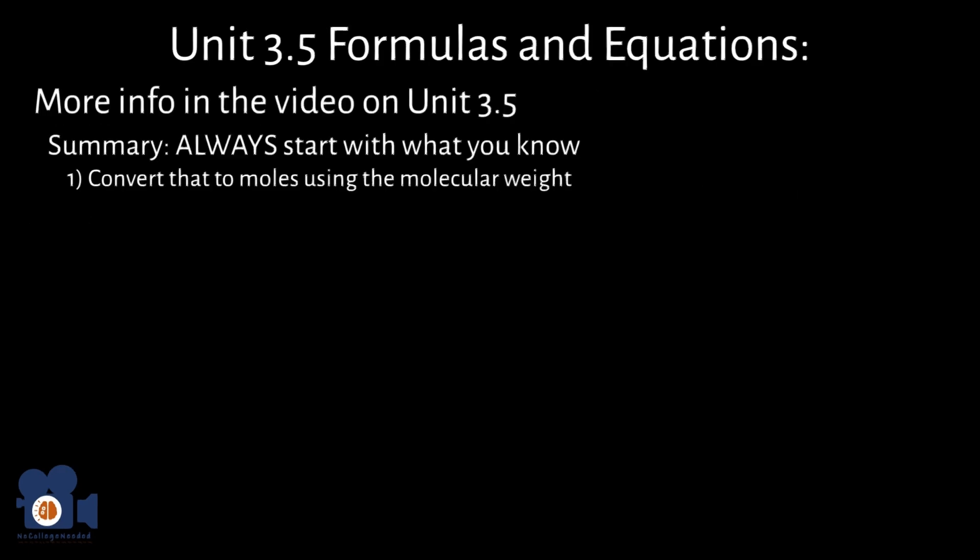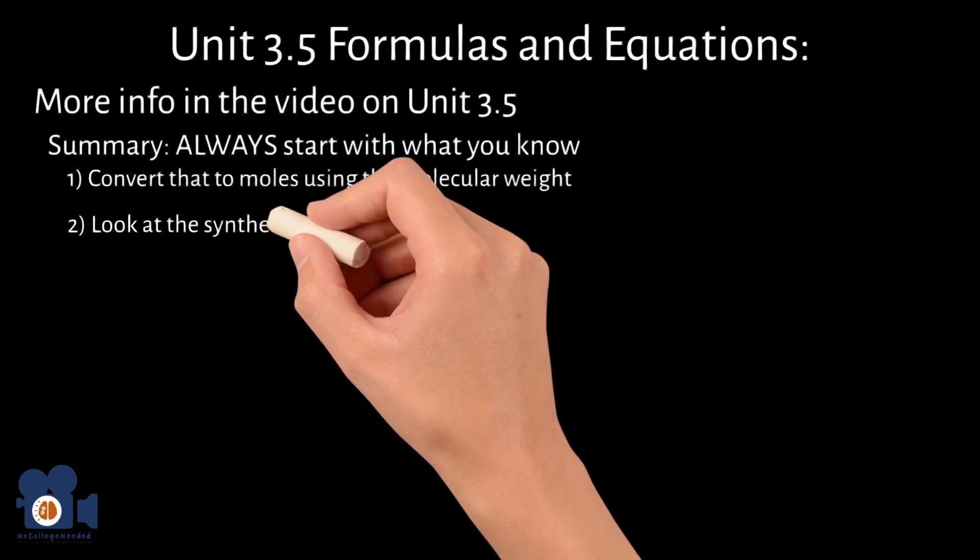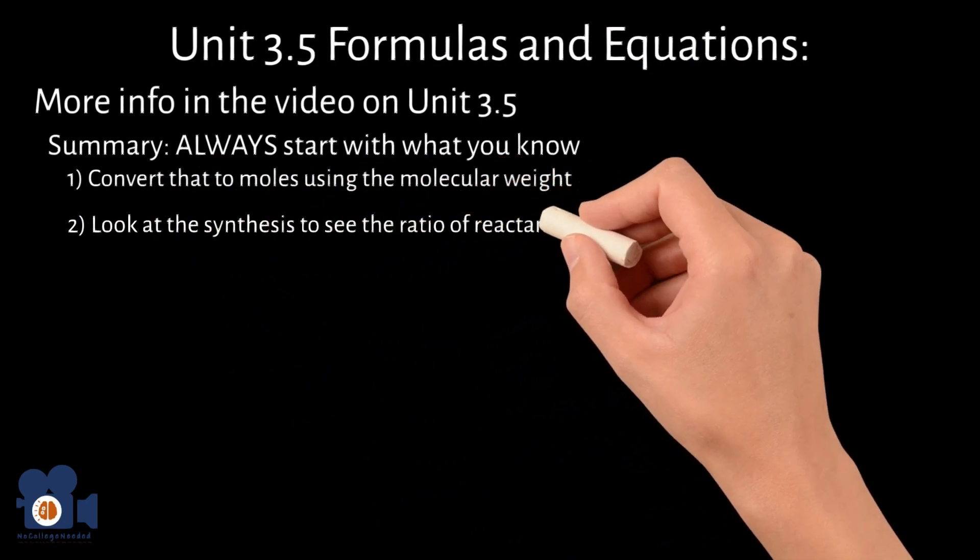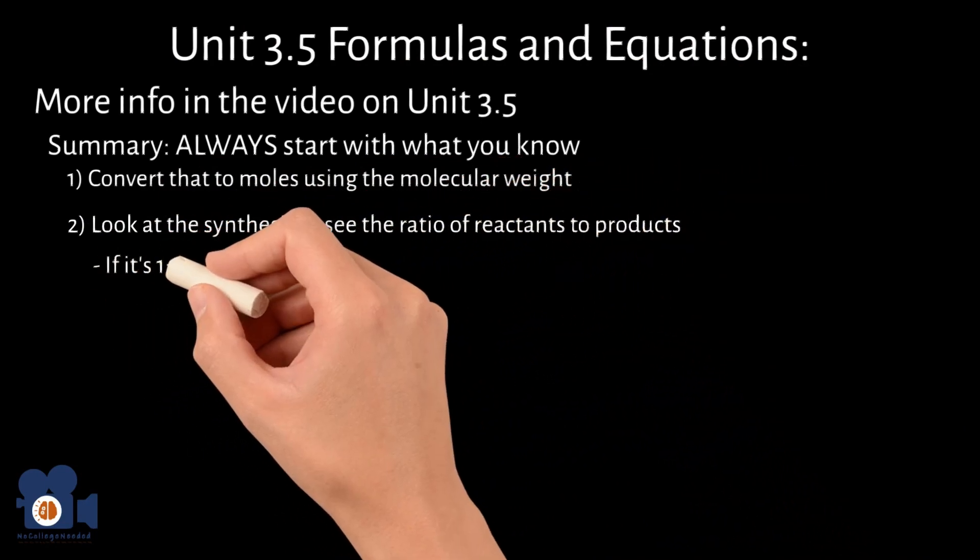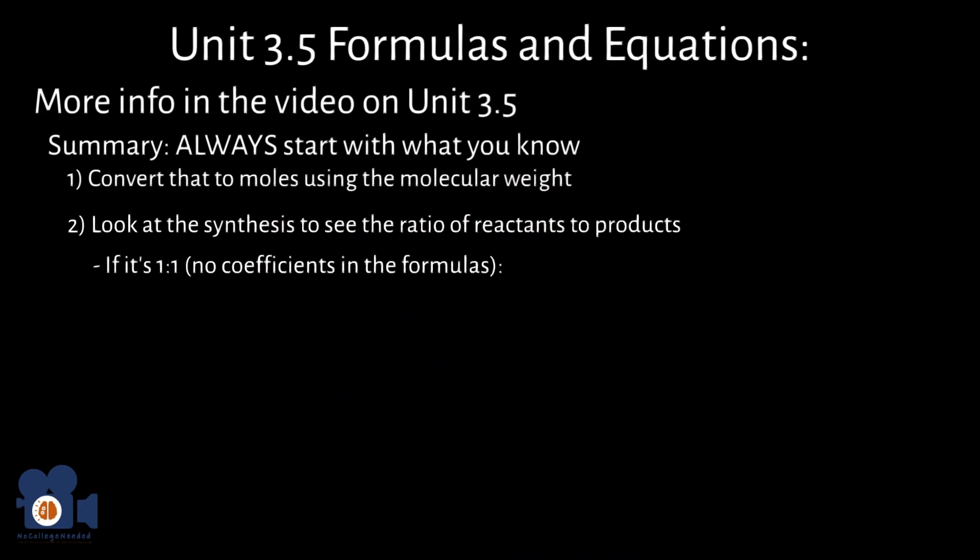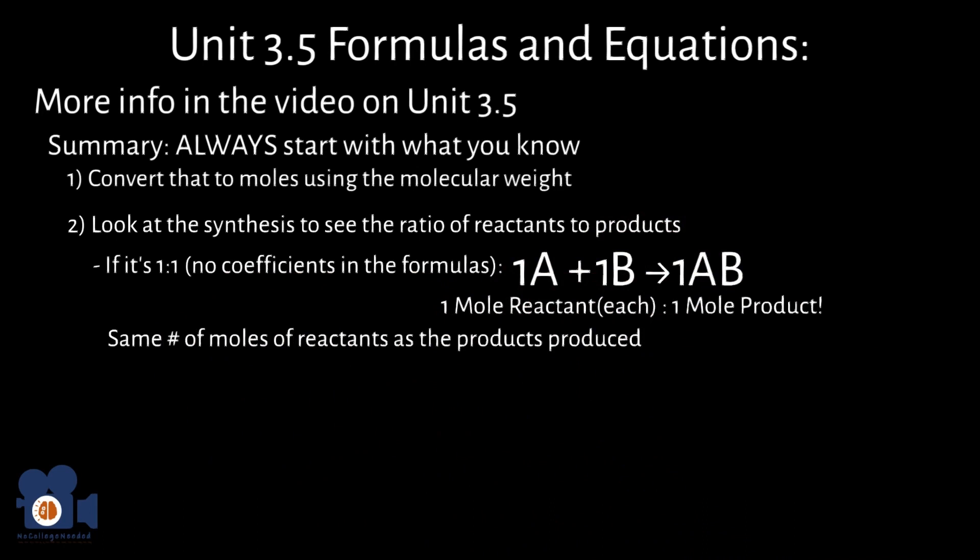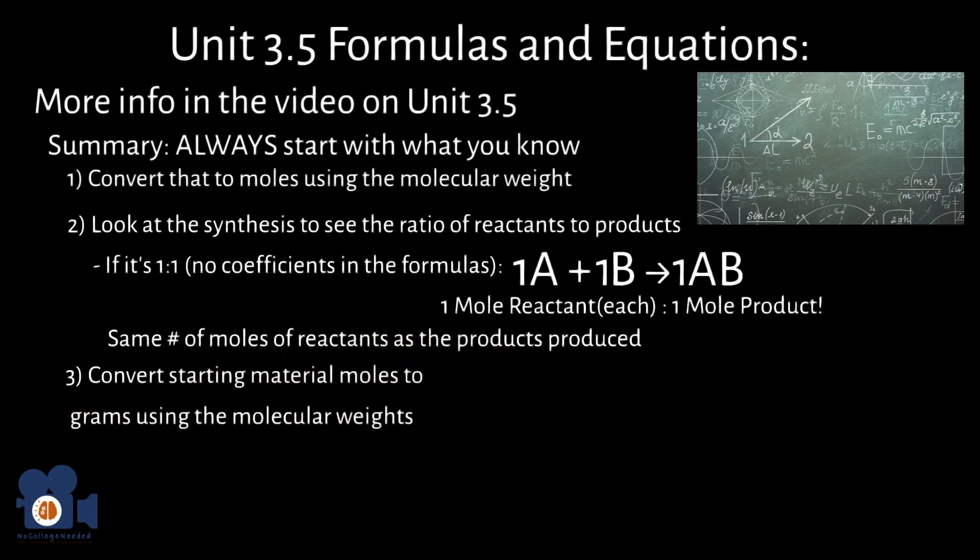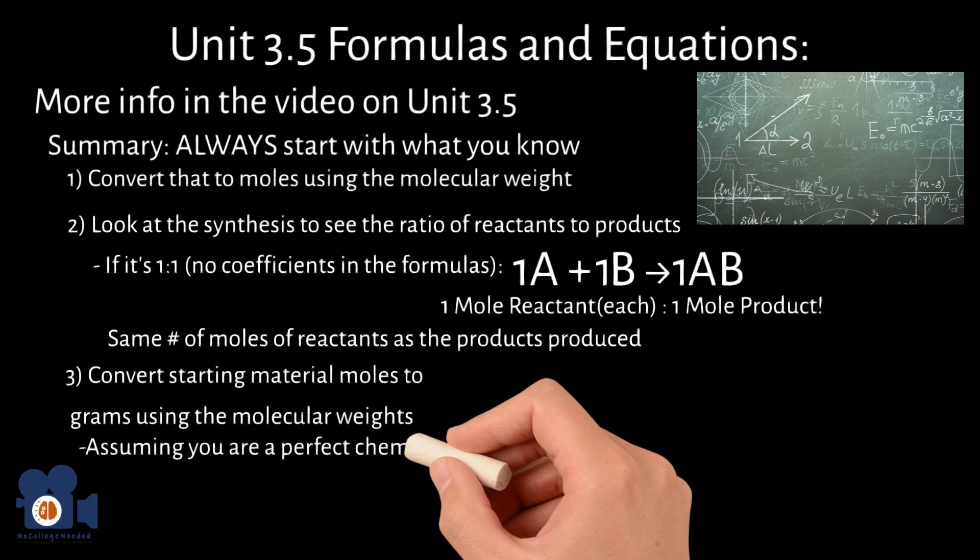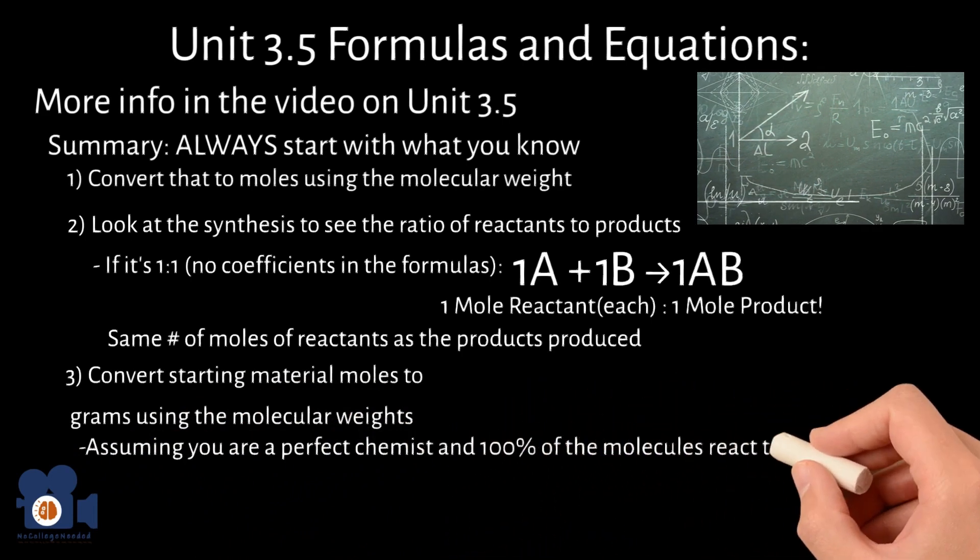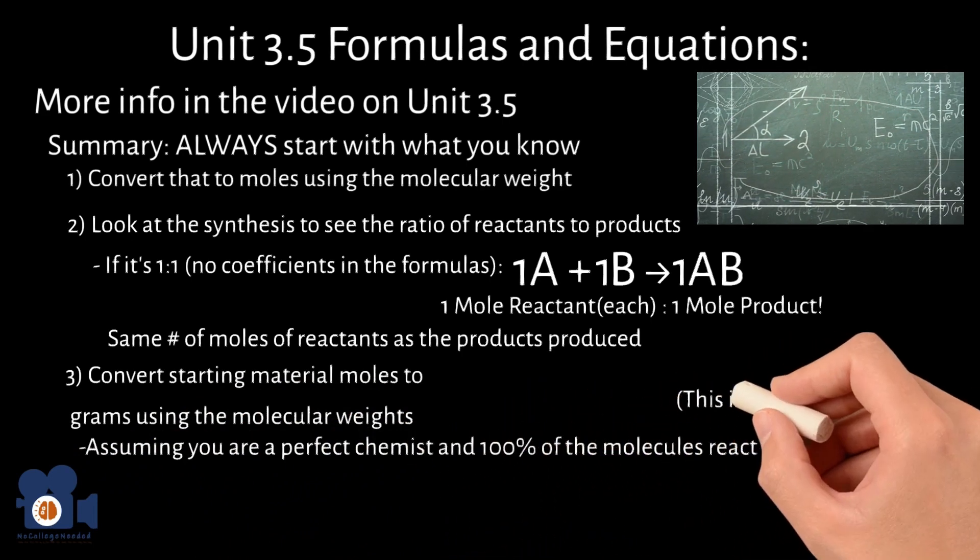Once you have the moles of product, you look at the synthesis to see the ratios of reactants to products. If it is a 1 to 1, meaning no coefficients in the formulas, you'll need the same moles of reactants as the products produced. That is the meaning of 1 to 1. Once you have the moles of starting materials, you then convert those moles to grams using the molecular weights. It is important to keep in mind that this is assuming you are a perfect chemist and 100% of the molecules react to form the product. This is seldom the case.